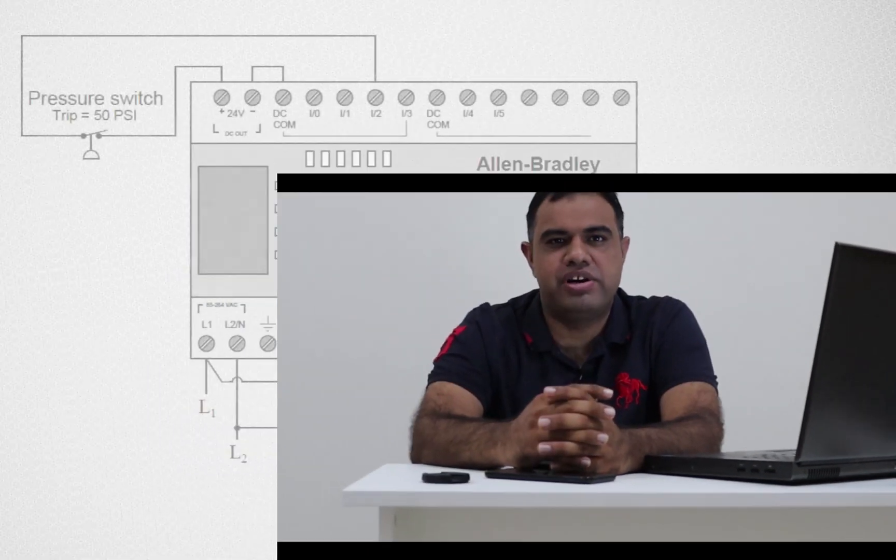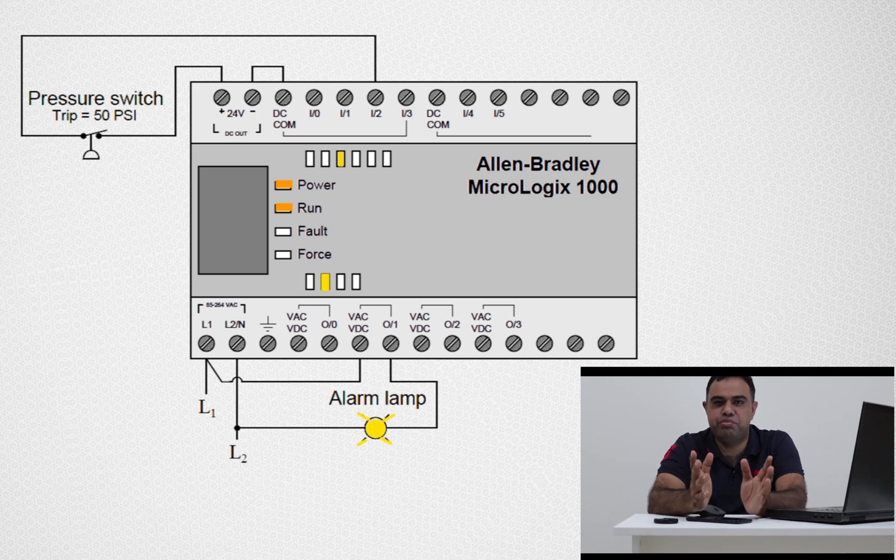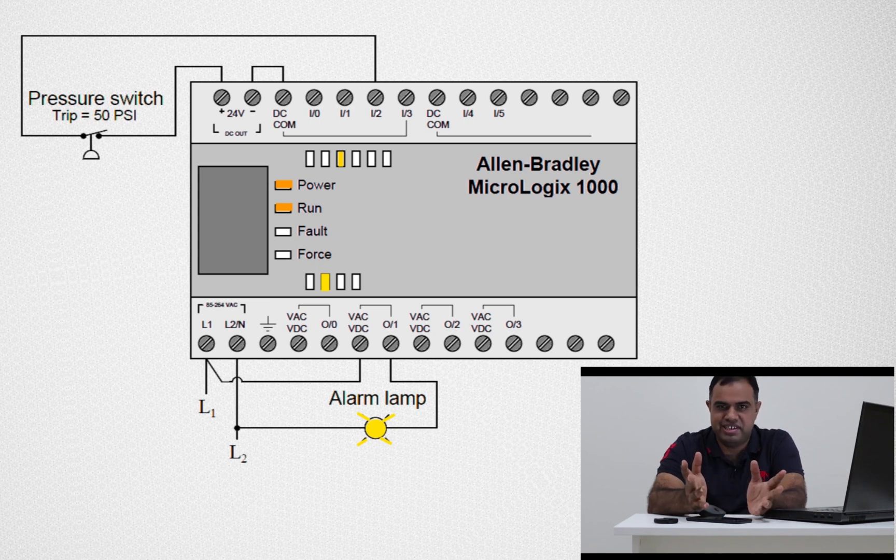As a beginner in PLC programming, it is really important to understand the sequence of operation of the PLCs. For example, if an output is to be turned on or an input needs to be updated in the program, it seems that the processor does it instantly.